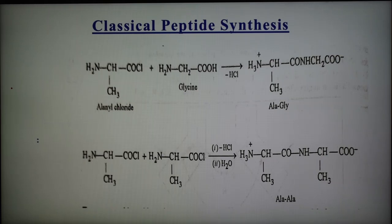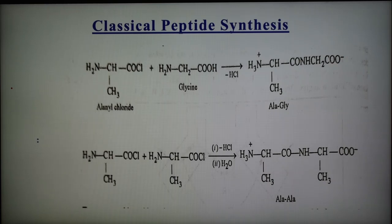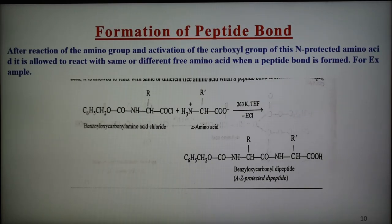There are two drawbacks of the classical peptide synthesis. First, it is time-consuming: the classical method requires several steps involving protection, activation, condensation, and deprotection for each new peptide bond to be formed, making the process very tedious. Second, it gives low yield: since the process involves a number of steps, the overall yield decreases after each extension, even though each individual step may have an excellent yield of 80%.